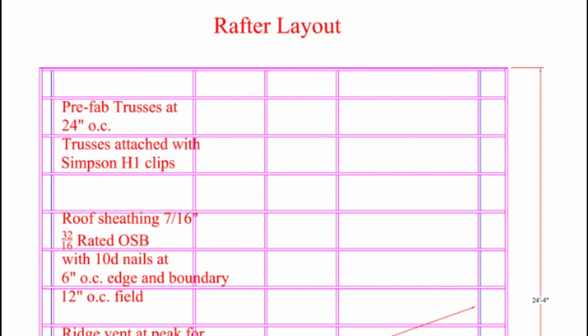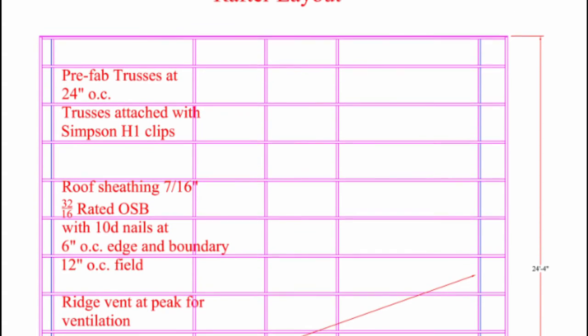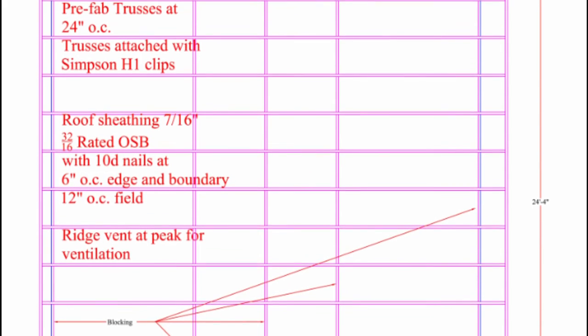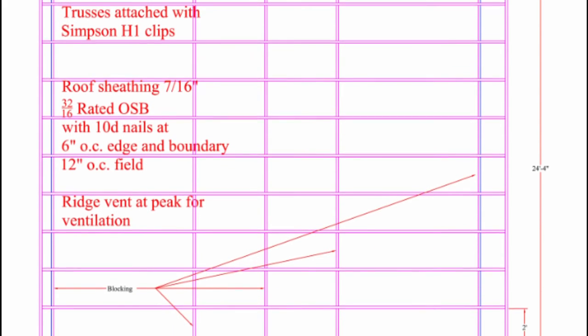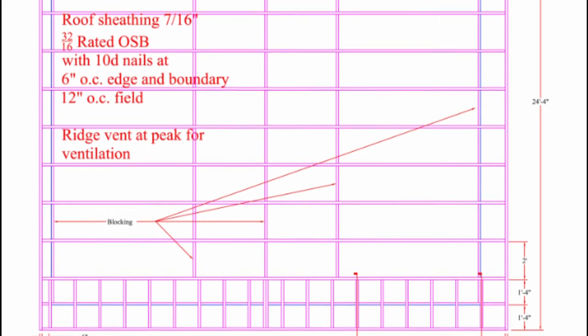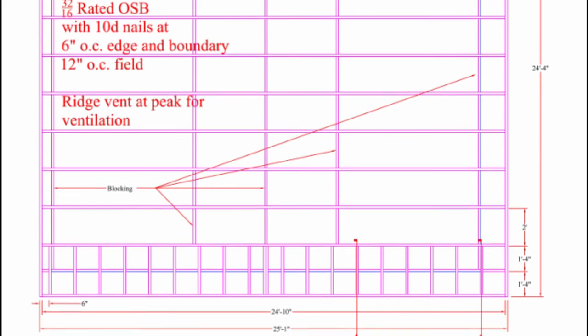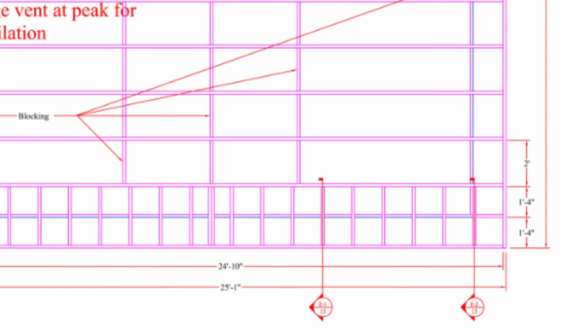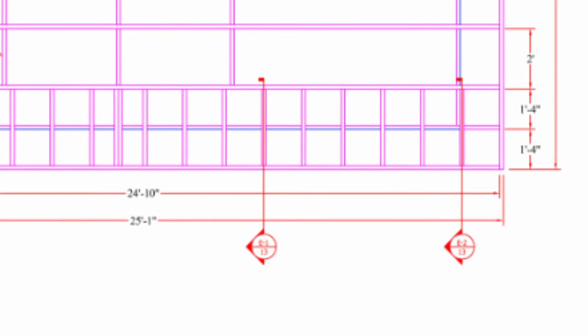I put notes in there for the sheathing, the thickness of the OSB, the nail types and how close the nails have to be on the edges and then how close they have to be in the middle. I'll use a ridge vent for the top of the roof to allow heat to escape. On the front of the garage you can see the ladder frame which will extend the roof beyond the front of the garage. This will help keep water and snow away from the garage doors. Cross sectional views E1 and E2 on page 13.